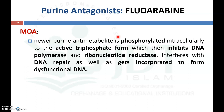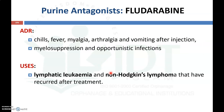Another purine antagonist is fludarabine, a newer purine analogue. Its metabolite is phosphorylated intracellularly to an active triphosphate form, which then inhibits DNA polymerase and ribonucleotide reductase, thereby interfering with DNA repair and incorporating into dysfunctional DNA. Adverse drug reactions include chills, fever, myalgia, arthralgia, and vomiting after injection, as well as myelosuppression and opportunistic infections. It is mainly used for lymphatic leukemia that has recurred after treatment.